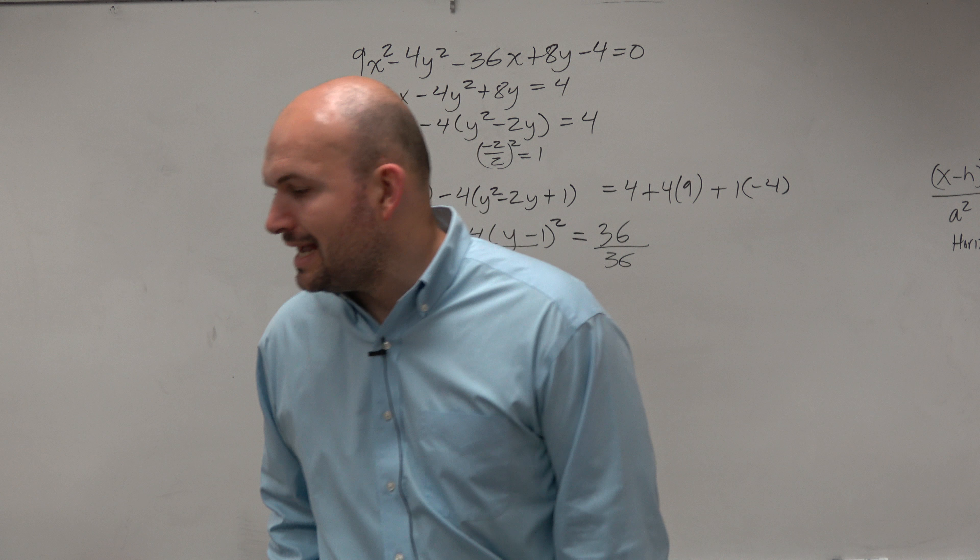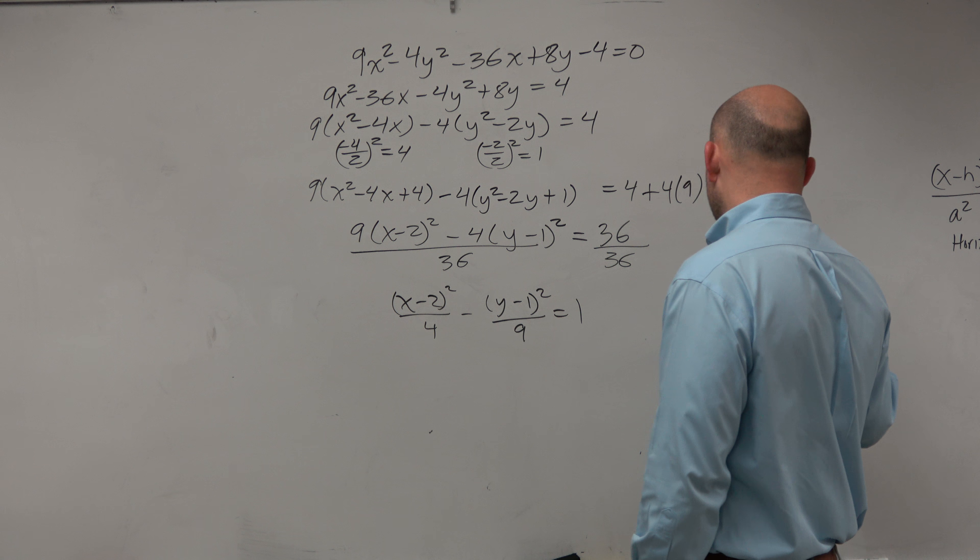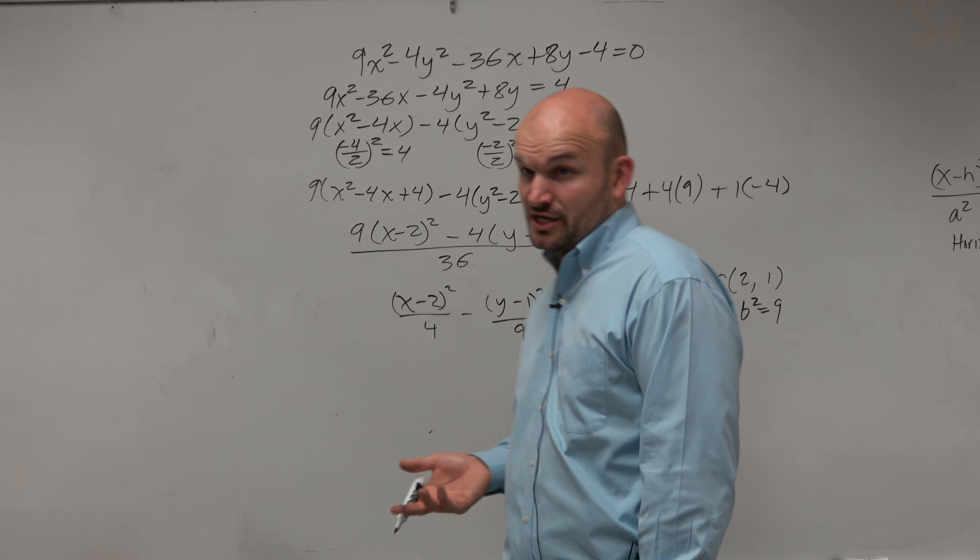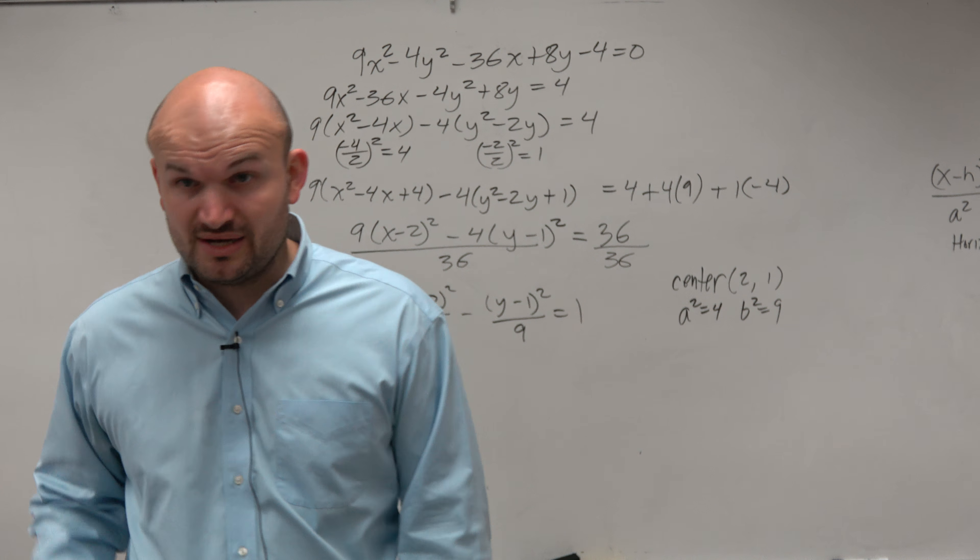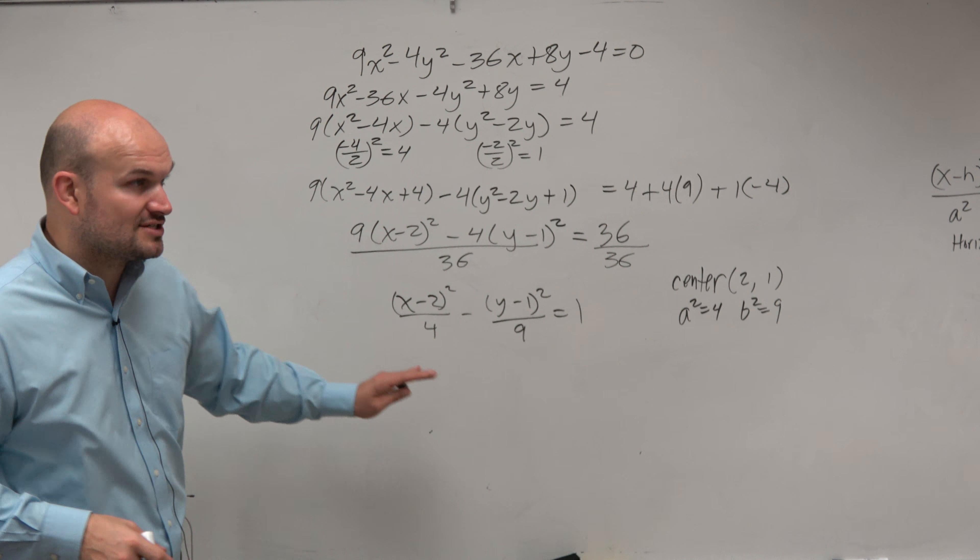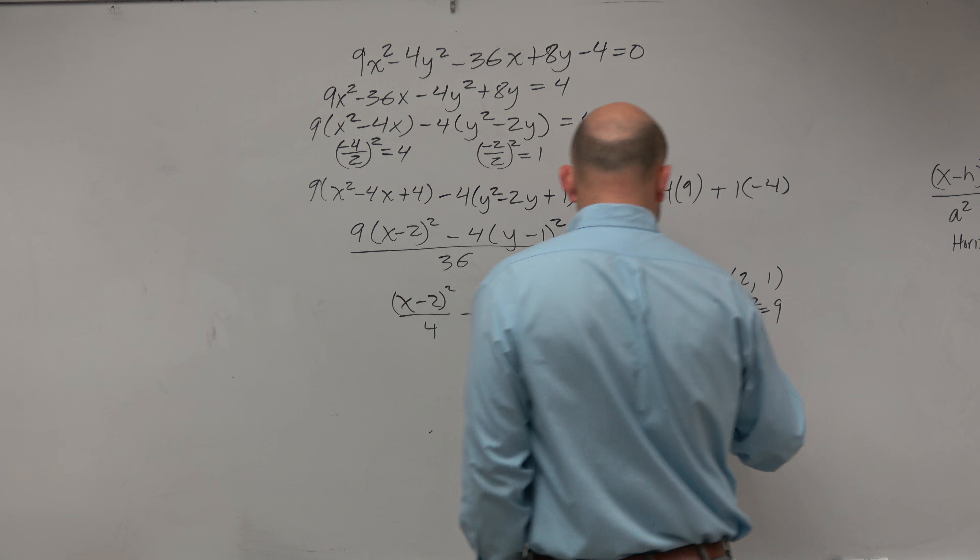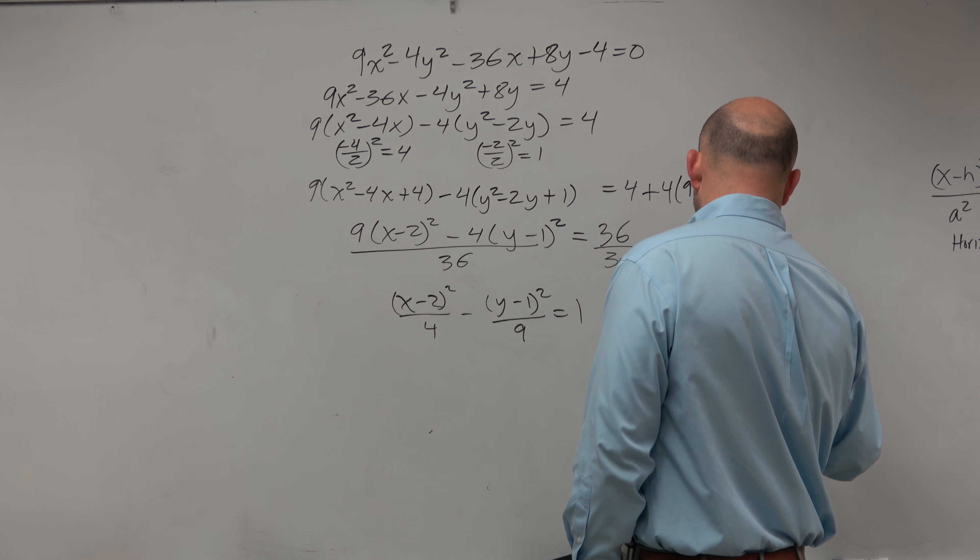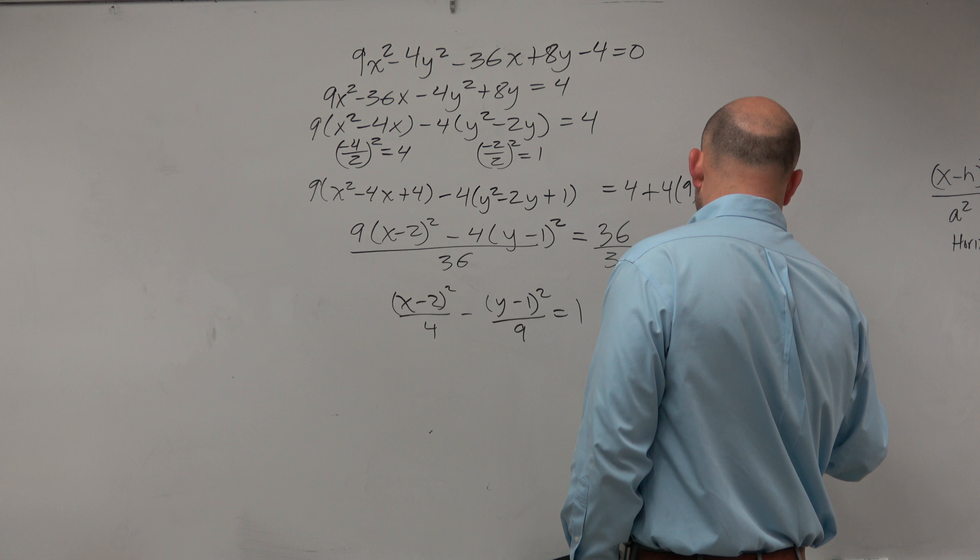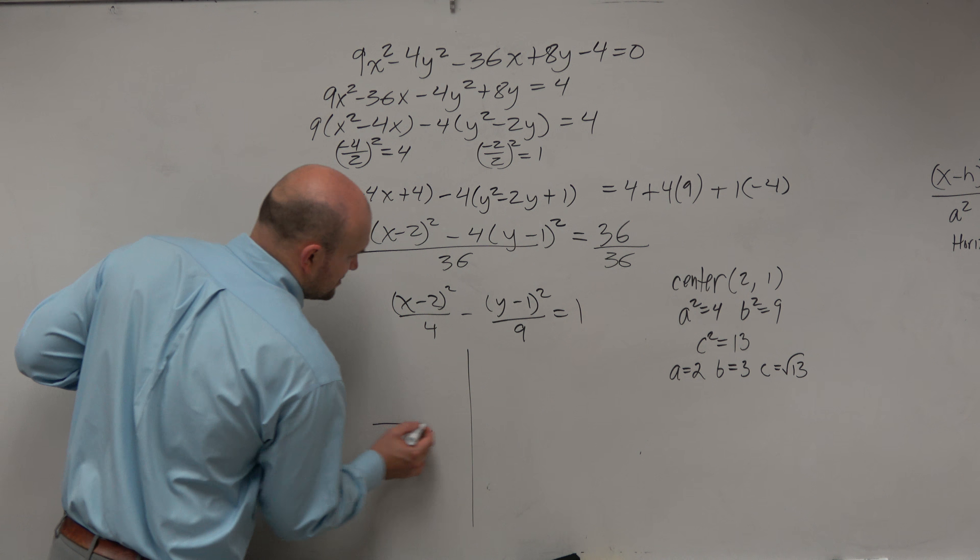And we have x minus 2 over 4 squared, right? Because 9 over 36 is 1 fourth. Minus 4 over 36 is going to be 1 ninth. Now we're done. And now what you guys can see is it's kind of easy for us to identify the center. So in this case, what I'll do is I'm just going to identify all the important pieces, and then I'll just do a rough sketch. So the center is at 2 comma 1. a squared is equal to 4. b squared is equal to 9. Again, another example when a squared is not larger than b squared, right? But a squared is in front. And a squared is under the x. So therefore, I should have a horizontal major axis.